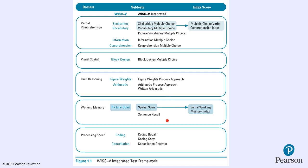On the Working Memory domain, a Visual Working Memory Index can be obtained from Picture Span and Spatial Span, requiring the WISC-V Picture Span. This is helpful because the WISC-V only has an auditory working memory index and a mixed working memory index as its primary index score. Research shows domain specificity in school-aged children between auditory and visual domains. Sentence Recall expands the construct coverage of working memory; it's a dual-task auditory paradigm with no sequencing, creating higher cognitive load where the child listens to a question, answers it, and then does some repetition.